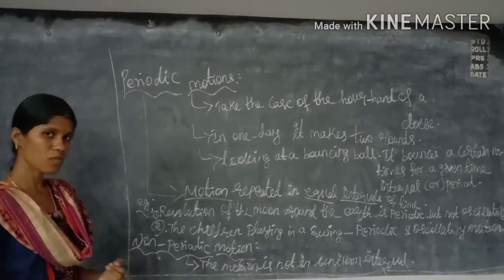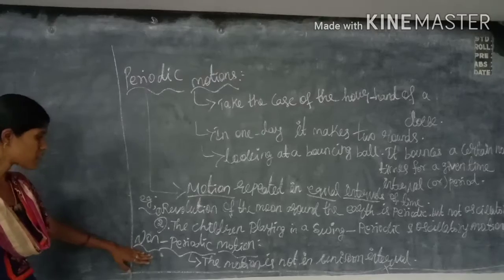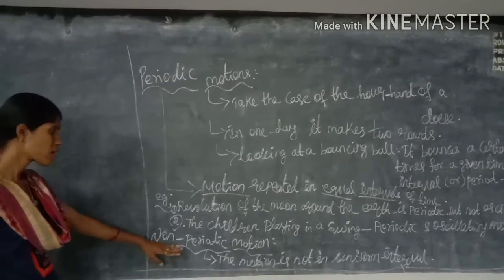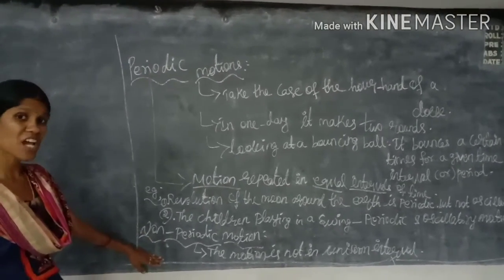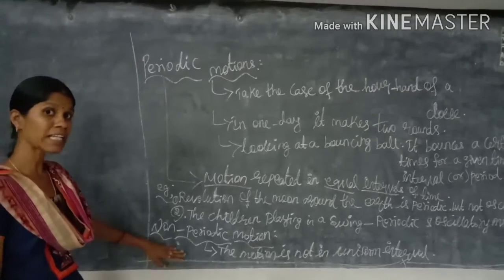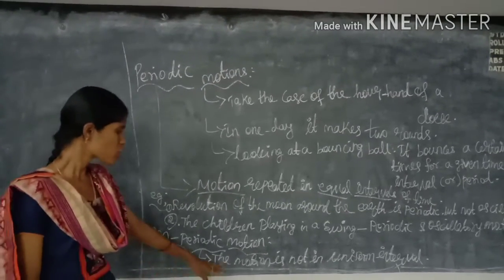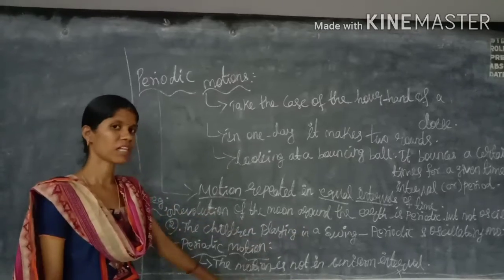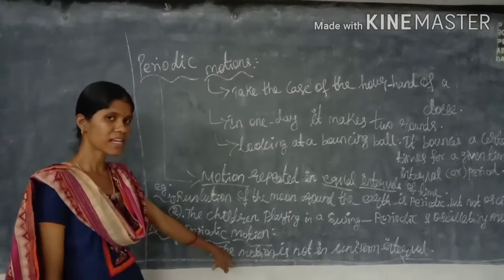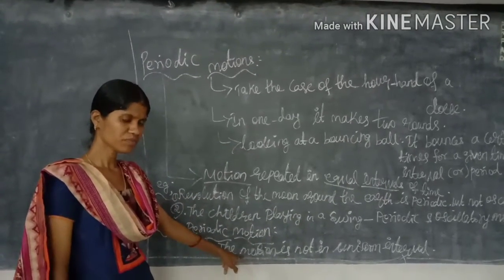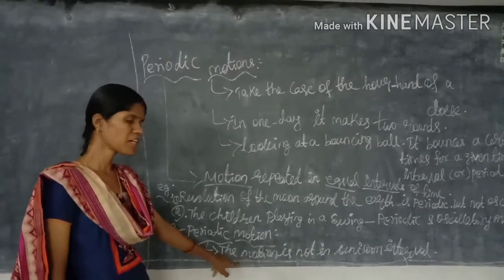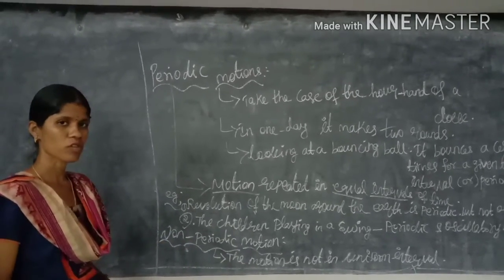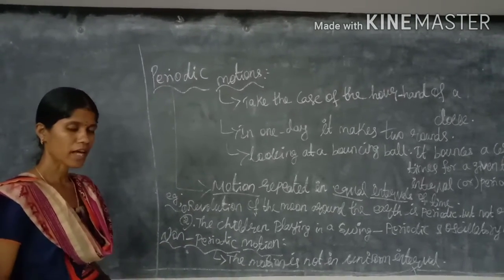The next type is non-periodic motion. In non-periodic motion, the time interval is not equal — it is an unequal time interval. The motion is not uniform in interval; there is some change in the time interval. That is why this is referred to as non-periodic motion. Thank you, students.